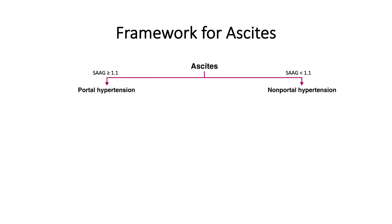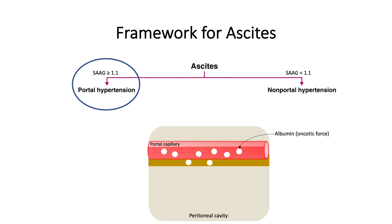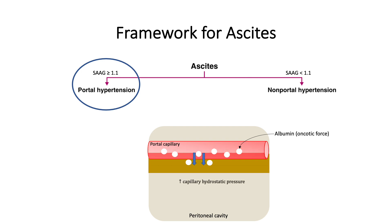While you can commit the number 1.1 to memory, it's always better to understand the idea behind it. You should try to understand why portal hypertension causes a high gradient. Two forces govern the movement of fluid in and out of the capillary space: hydrostatic force and oncotic force. Albumin is the major oncotic player in blood and is represented in the SAAG formula. A high gradient means there is a healthy amount of oncotic force in the blood not allowing fluid to leak out, and not much oncotic force in the peritoneal space pulling fluid in. Therefore, the force causing fluid to move from the capillary into the peritoneal space must be hydrostatic — and that comes from portal hypertension.